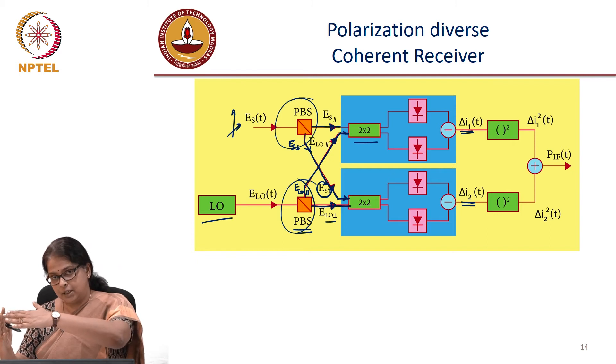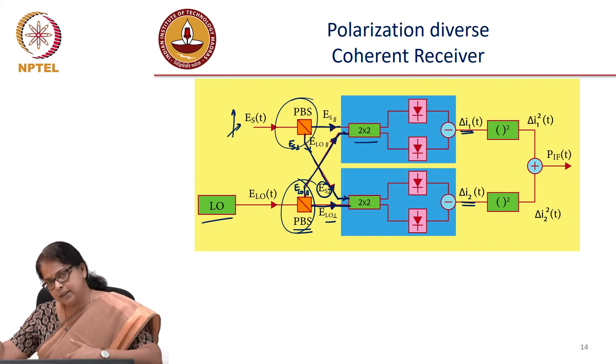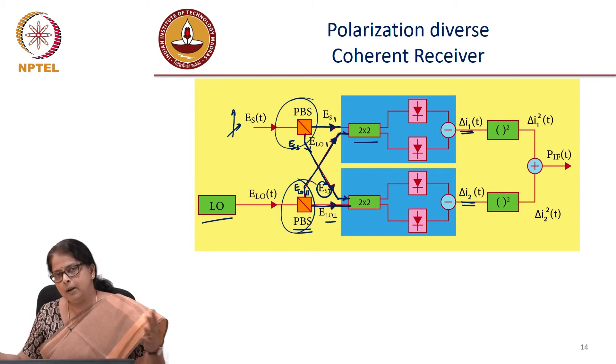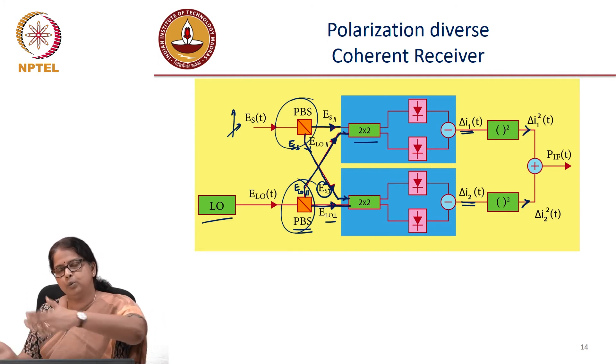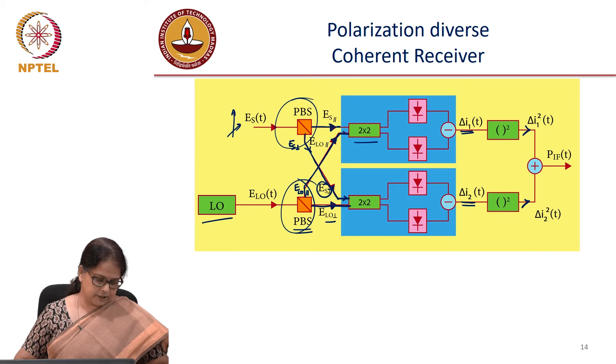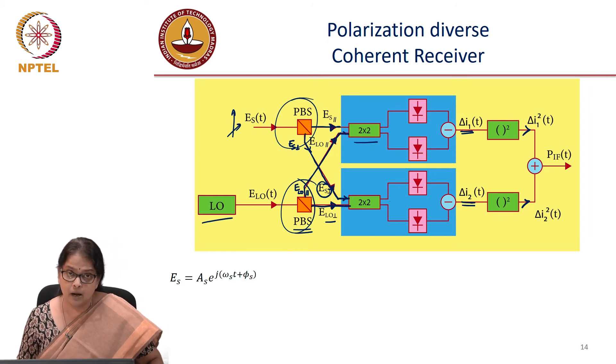If it is a single polarization transmission, you add up the currents and process your data. If it is a dual polarization transmission, do not add up. You basically demodulate what is appearing in the two polarizations. So how does the math work?